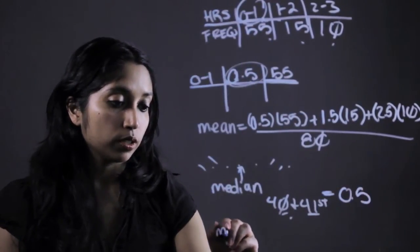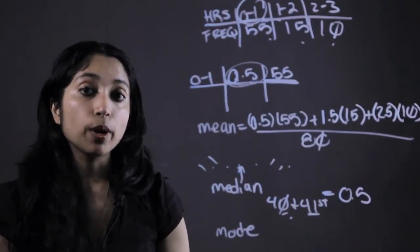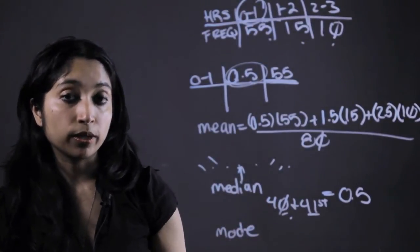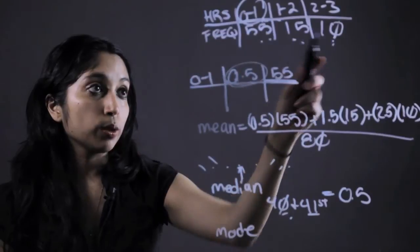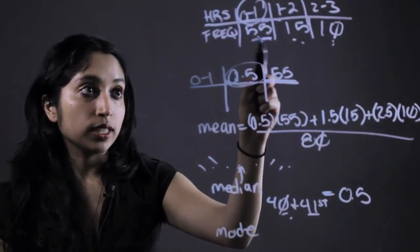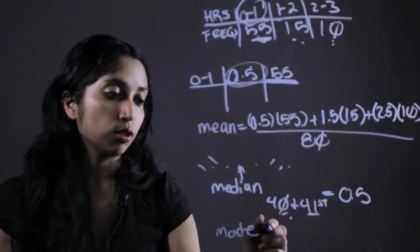Now for our mode, well that's the easiest of them all. Because the mode is just the number that occurs the most amount of times, and they've already been grouped for us. So the mode in this case is going to be that 0.5.